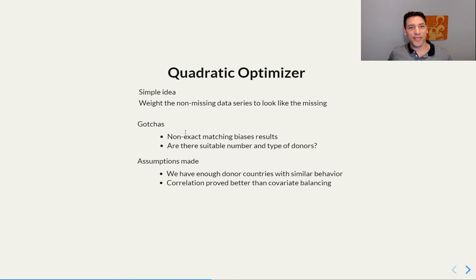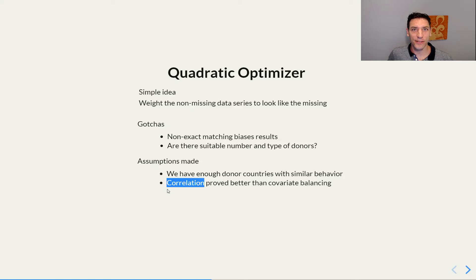How do we estimate those K missing series? It's a simple idea that goes back to even the first paper on synthetic control — basically to weight the non-missing data series to look like the missing ones using a quadratic optimizer. There are a few theoretical things to be aware of, such as bias, because you're not matching exactly, and whether the donors are suitable donors for our missing test countries. We're going to assume we have enough donor countries with similar enough behavior, and then we're going to use correlation. This is the second key extension of our model — using correlations rather than covariate balancing, though you could also use covariate balancing.